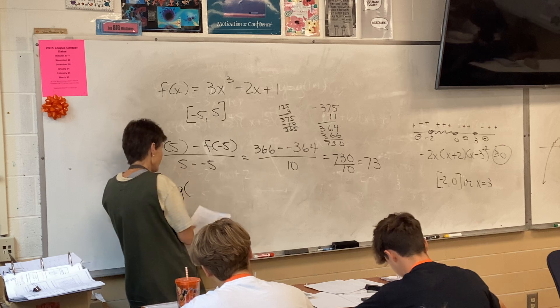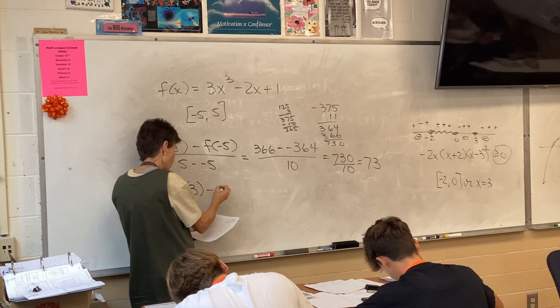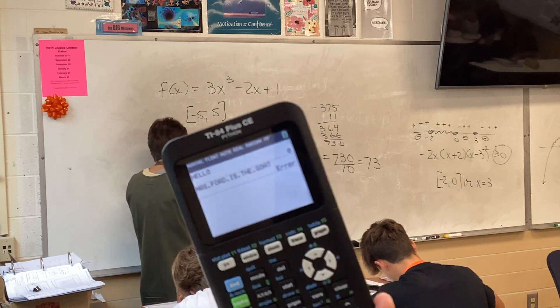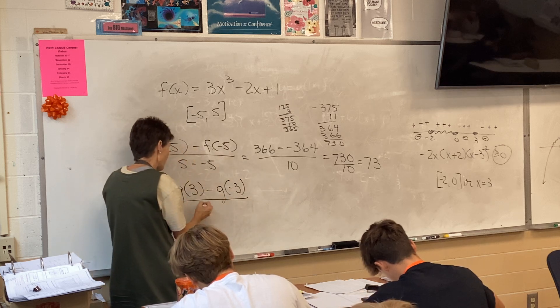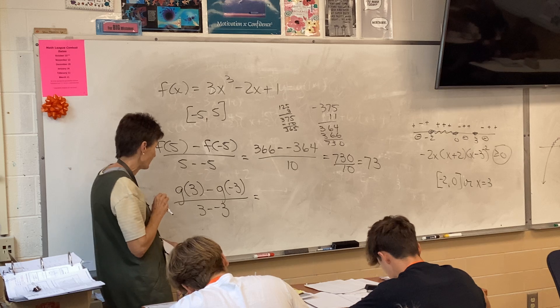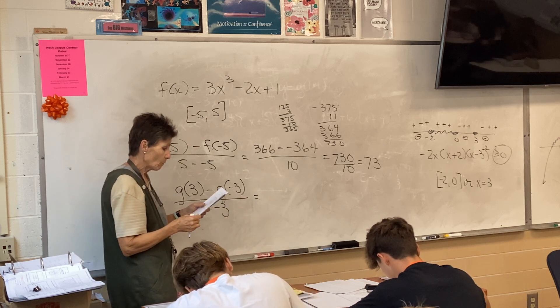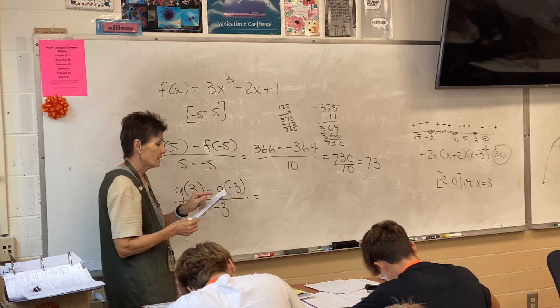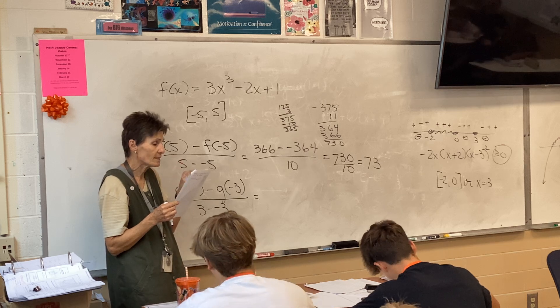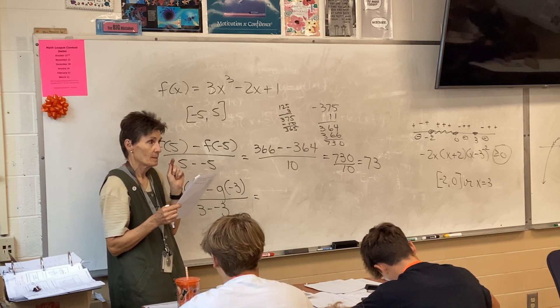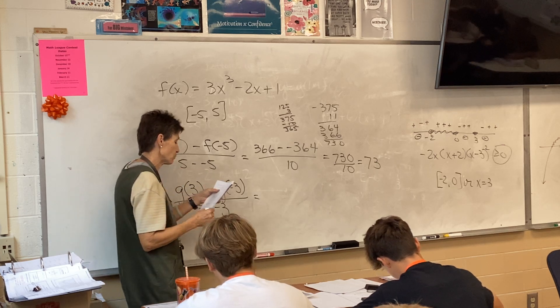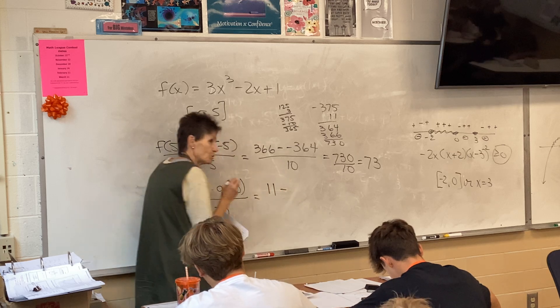Alright, same thing, only now we're doing function G, which is a piecewise function. So we're setting up our little formula, our average rate of change formula. And now we've got to find G of 3. Now be careful, are you going to plug into the top row of your piecewise or the bottom row? Bottom. Because 3 is bigger than 2. So G of 3 is going to be 11. Would you agree with that?